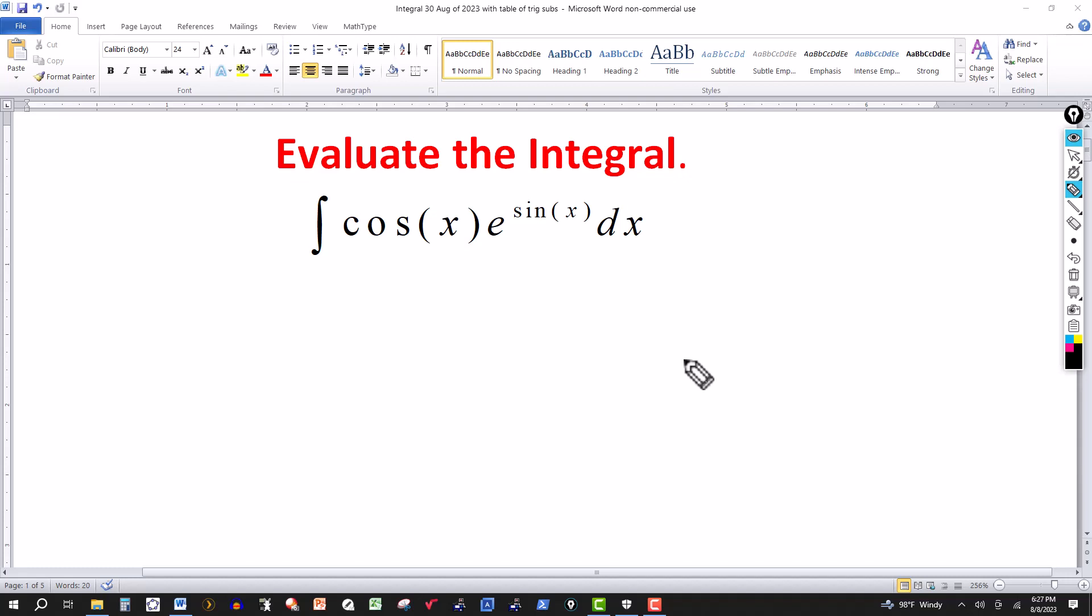Now we're going to be doing a u substitution again on this one. Sometimes they're obvious, sometimes they're not. We look at the exponent for e here, sine of x. The derivative is cosine.